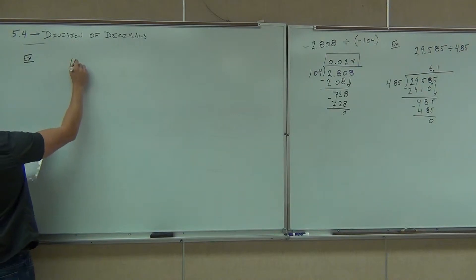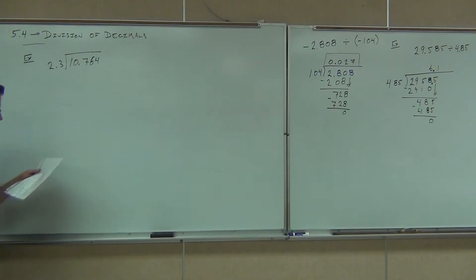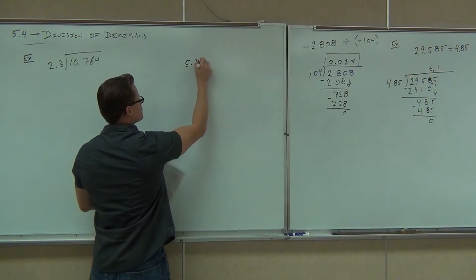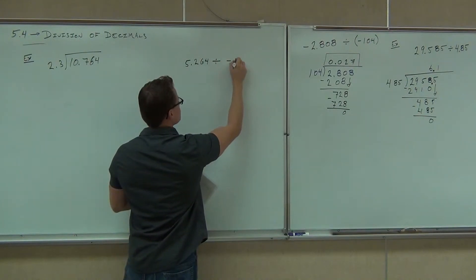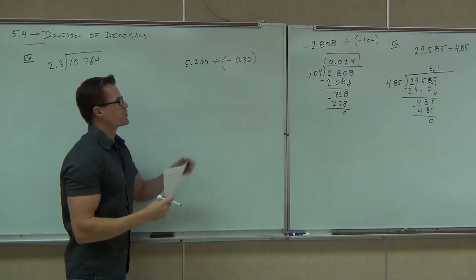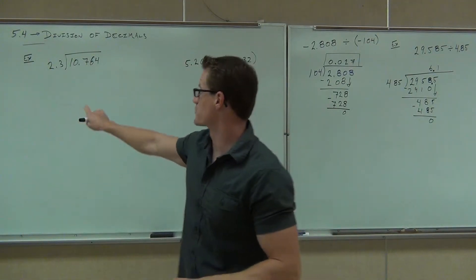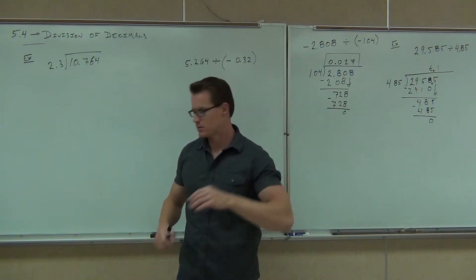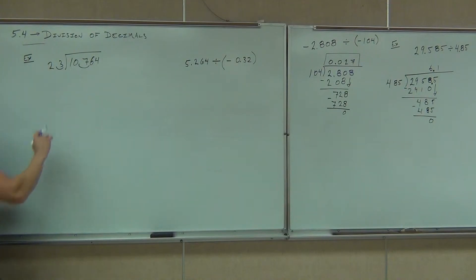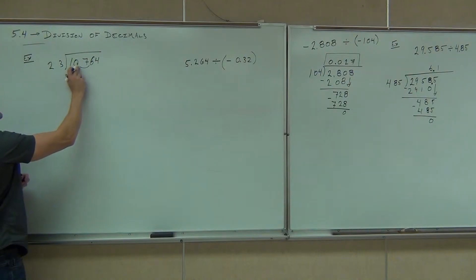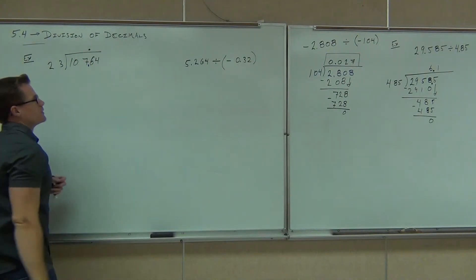So let's try 10.764 divided by 2.3. Notice how I'm putting parentheses around there signifying we're not subtracting — we have a negative number. First one set up for you. What's the first thing you're going to do on this first problem? Move the decimal. How many spots? One. So moving the decimal, we translate this problem — instead of 2.3 we now have 23, and instead of 10.764 we have 107.64. After that we've got to make sure that decimal place is also up here in the quotient.